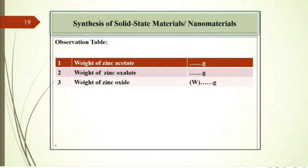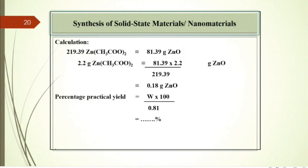Observation table: Weight of zinc acetate, weight of zinc oxalate and finally weight of zinc oxide. Calculation: 219.39 g zinc acetate corresponds to 81.39 g zinc oxide. Therefore, 2.2 g zinc acetate corresponds to 81.39 times 2.2 divided by 219.39 g zinc oxide.